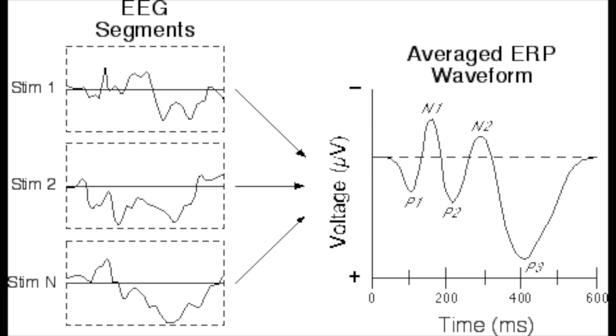An ERP — an Event Related Potential — is able to show you the brain's electrical response to a certain stimulus. There are two types of ERPs: ones which take place in the first 100 milliseconds are called sensory ERPs, and these reflect an initial sensory response to a stimulus. Ones that take place after 100 milliseconds are called cognitive ERPs, and these reflect information processing taking place on a stimulus — there's a bit of a delayed response. ERPs have the same spatial and temporal resolution as EEGs, because remember, ERPs are derived from EEGs.